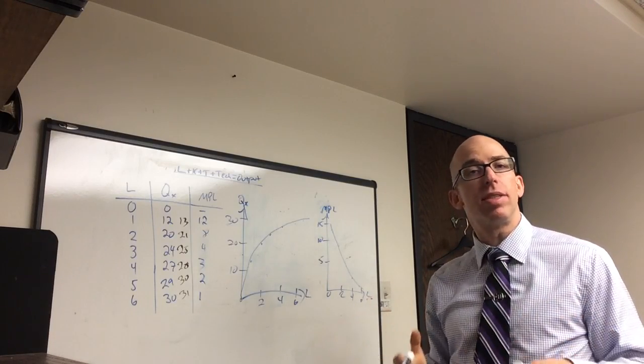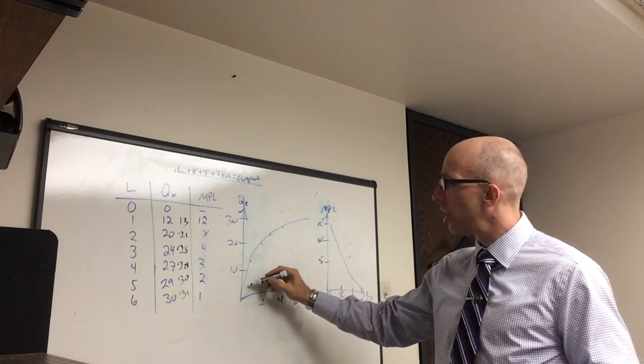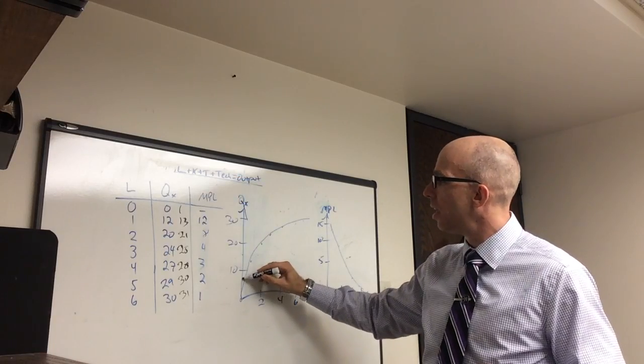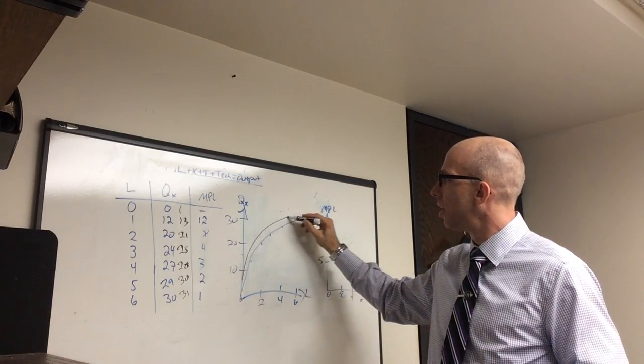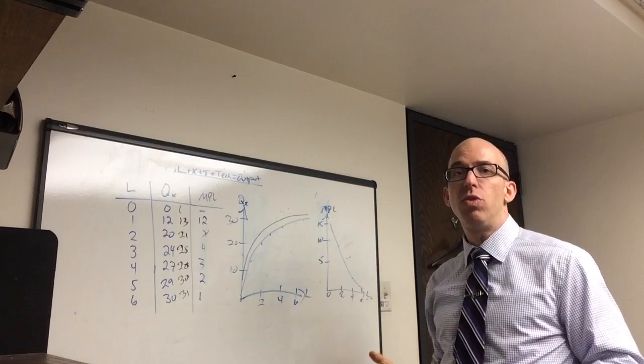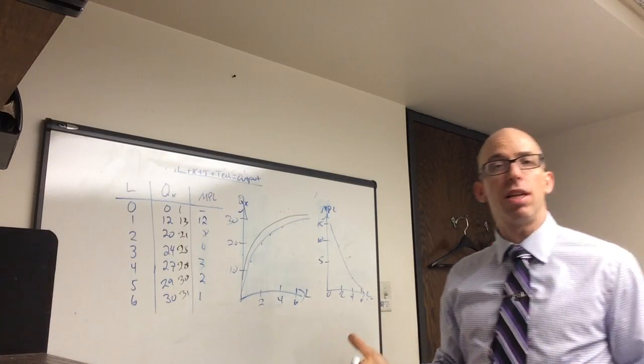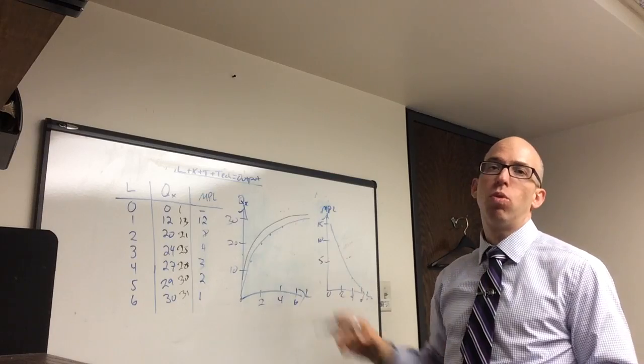If some technology came up that made each worker more productive, everybody made one more because of some invention, you could actually shift each of these points up. You could even start at one. You could add one to each of these numbers. You can draw a technological advance or sometimes an addition of capital or land or another factor by a shift upward in the curve.